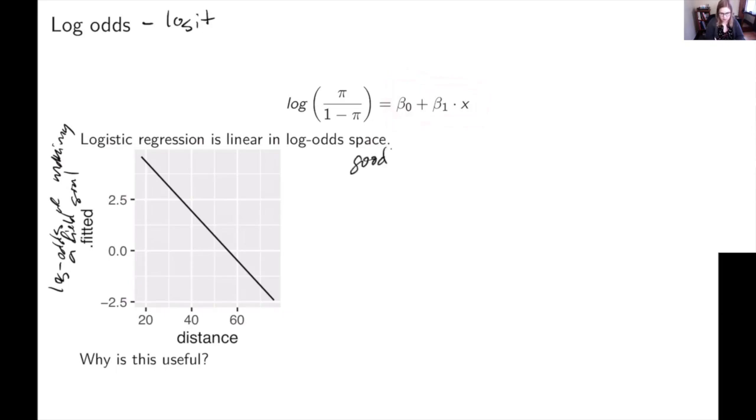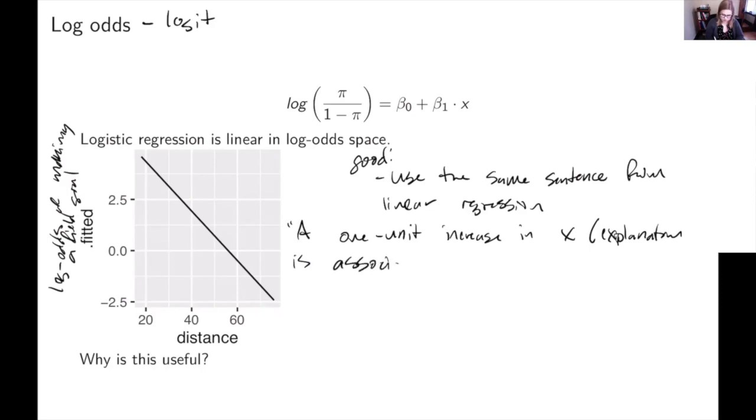This is good because you can use the same sentence from linear regression. So if you wanted to interpret that beta one coefficient, you could say a one unit increase in X, which is the explanatory variable, is associated with a beta one hat increase or decrease in the log odds of Y, which is the response.